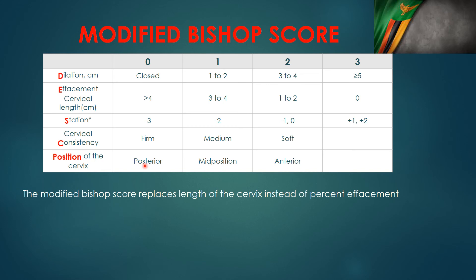For position of the cervix: you want it pointing towards you, which is anterior — that is good. If it is pointing slightly away, that is mid-position and not as good. If it is posterior — pointing away from the examiner and hard to find — that is bad. That is how you calculate your Bishop score by adding all the parameter scores.